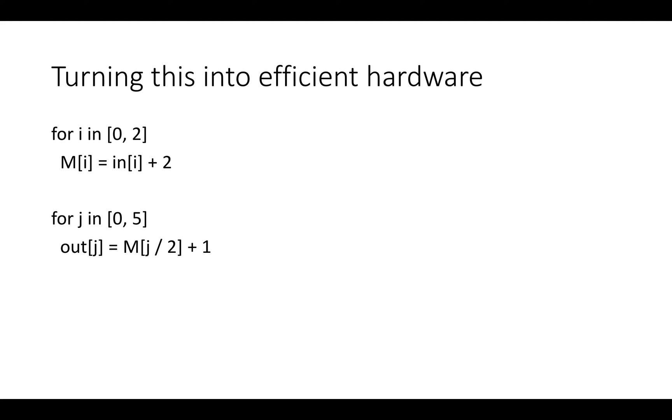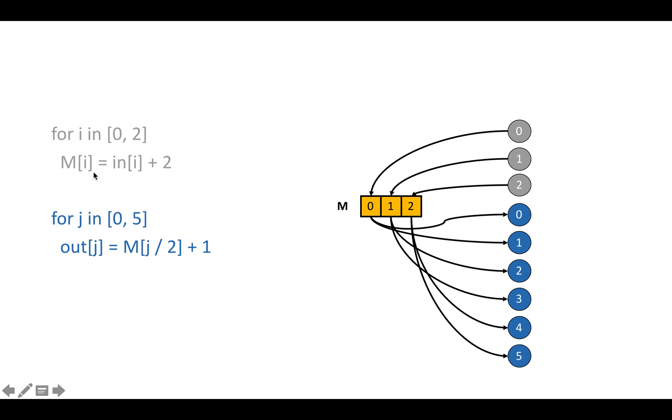So how do we turn a loop nest like this into efficient hardware? Well, there's a lot of different ways to view it. But one interesting way to start is just to look at the way that data is flowing through our buffers like in and memory. So we can think of this loop, which I'm going to call the producer loop, as writing to the temporary buffer M. And we can think of this loop, which I'm going to call the consumer loop, as reading values out of M.